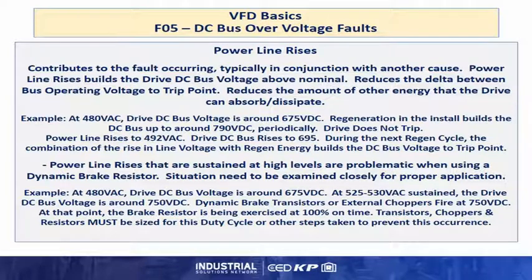Power lines sustained at high levels are problematic when using a dynamic brake resistor and the situation needs to be examined closely for proper application. For example, at 480 volts the drive DC bus is around 675 DC. At 525 to 530 volts AC sustained, the drive bus voltage is around 750 volts DC. Dynamic brake transistors or external choppers typically fire at 750 volts DC. At that point, the brake resistor is being exercised at 100% on time. Transistors, choppers, and resistors must be sized for this duty cycle or other steps taken to prevent this occurrence.